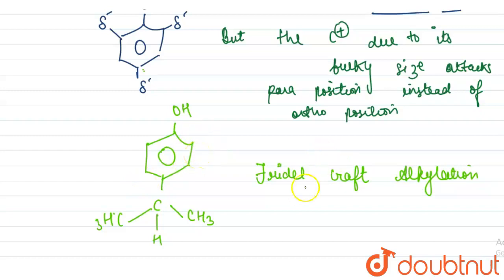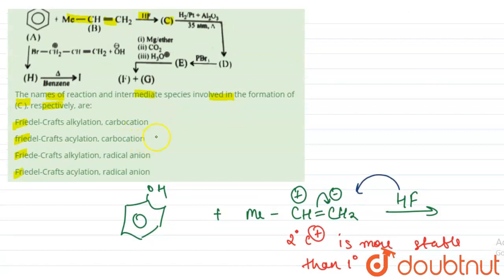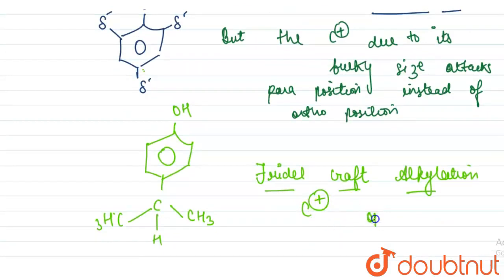Because an alkyl group has been attached at the para position of a benzene ring derivative, that is phenol here. So the intermediate was carbocation. The process was Friedel-Crafts alkylation. Hence our answer is option A: Friedel-Crafts alkylation and the cation is carbocation.